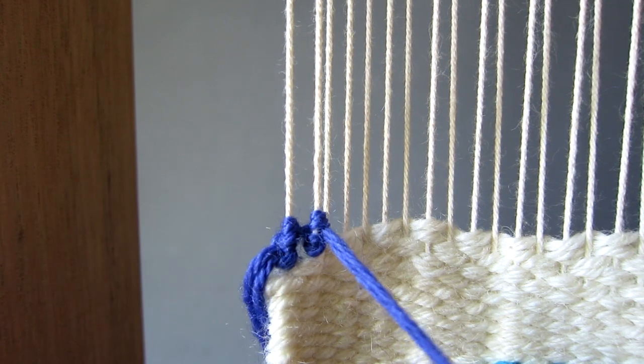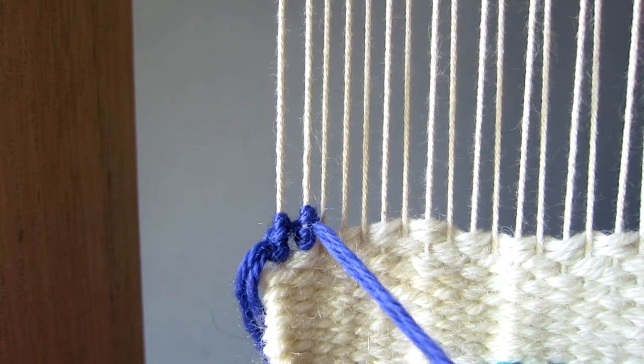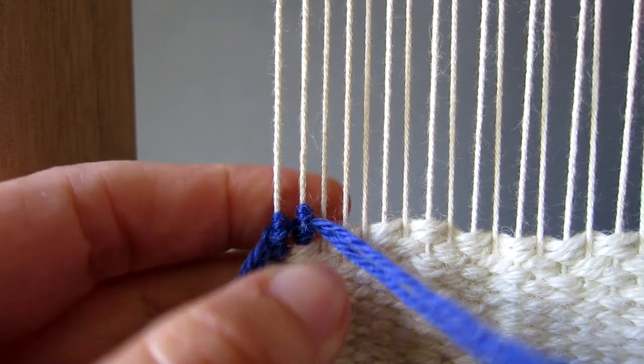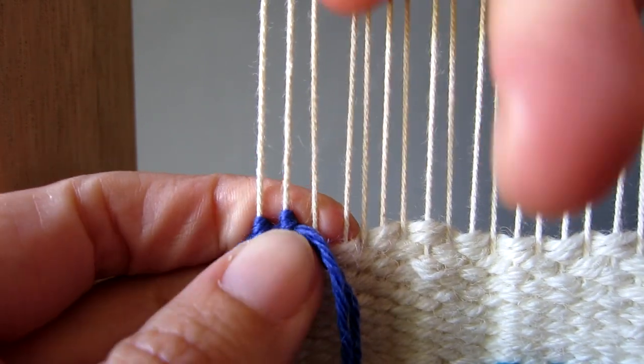The following warp threads are secured in the same way. First you go around the back of the next warp thread and then make two half hitch knots in succession.